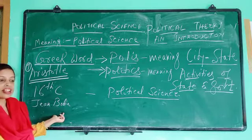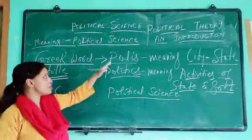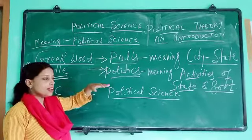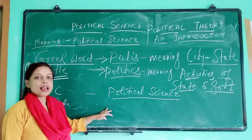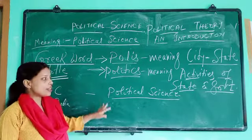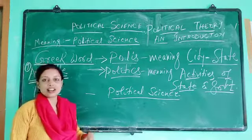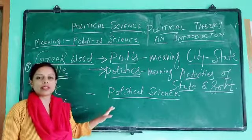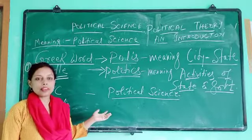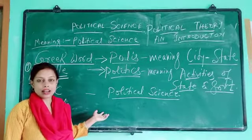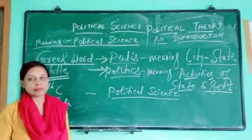So political science has changed three times. First of all, it was known as 'polis.' Secondly, it was known as 'politics.' And thirdly, it is known as 'political science.' Political science revolves around state and government and the different types of political activities that go on from time to time across different states. This is my first video on political science.